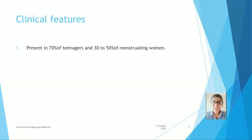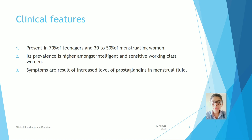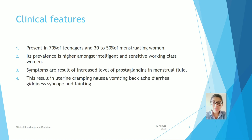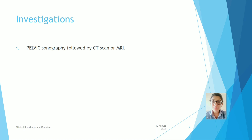Clinical Features: Present in 70% of teenagers and 30-50% of menstruating women. Its prevalence is higher among intelligent and sensitive working-class women. Symptoms are a result of increased levels of prostaglandin in menstrual fluid. This results in uterine cramping, nausea, vomiting, backache, diarrhea, giddiness, syncope and fainting.